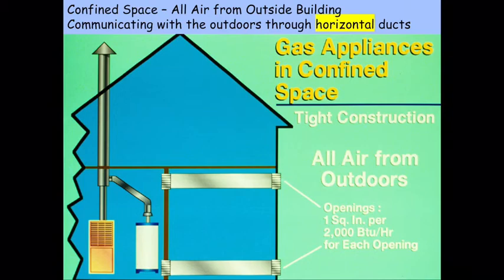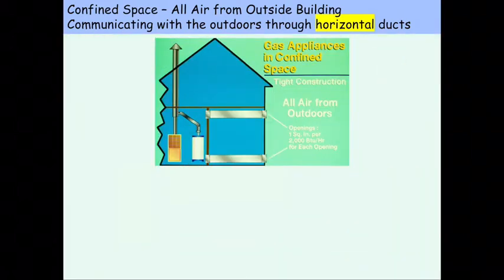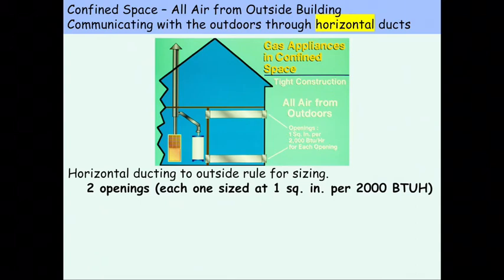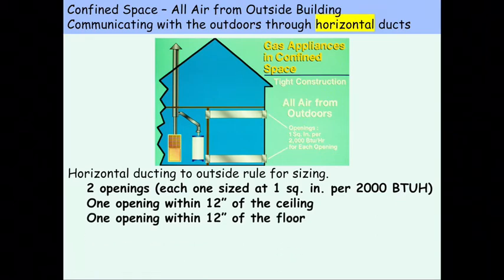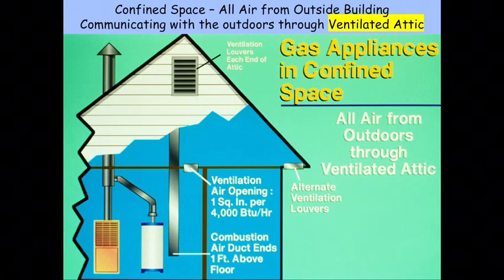Another option is using horizontal ducts to bring air from outside into a confined room. In this case, two horizontal ducts are run and each opening must be sized at one square inch per 2,000 BTUs per hour. The same placement rules apply: one within 12 inches of the ceiling, one within 12 inches of the floor, no less than 100 square inches, and no dampers — permanent openings only.